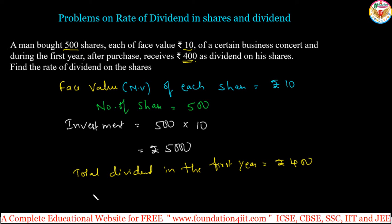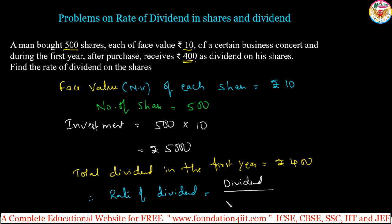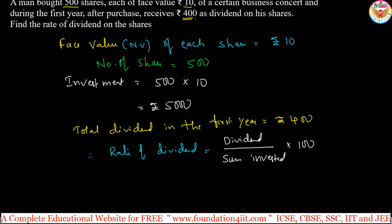Now we can calculate the rate of dividend. Rate of dividend tells us how much percentage profit we got. The formula is: rate of dividend = dividend divided by sum invested, multiplied by 100. Applying the values: dividend is ₹400 and investment is ₹5000, multiplied by 100.